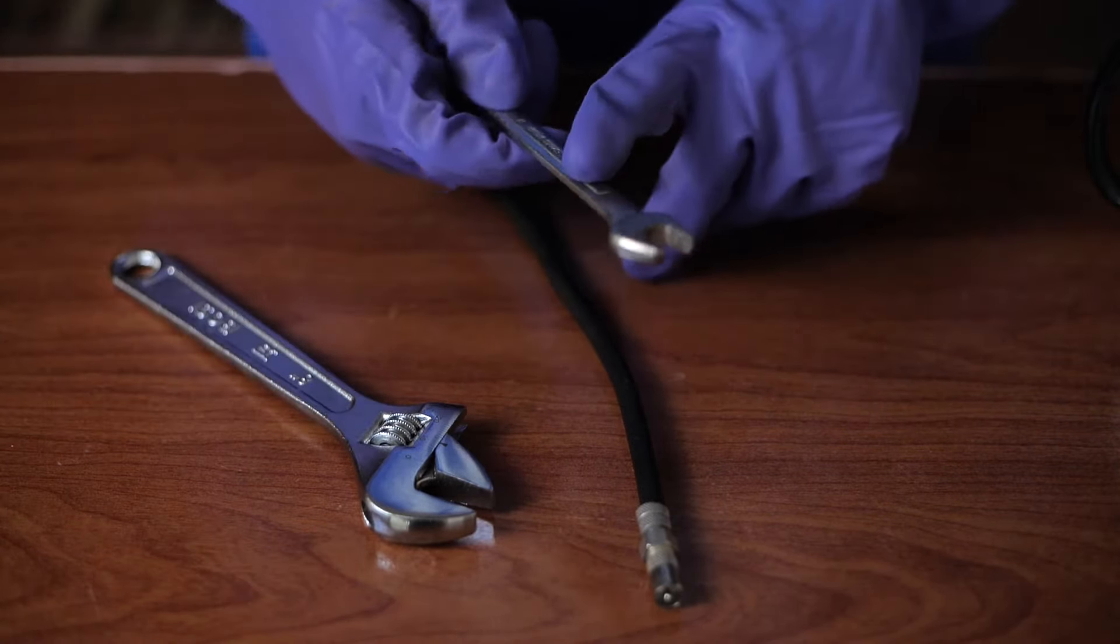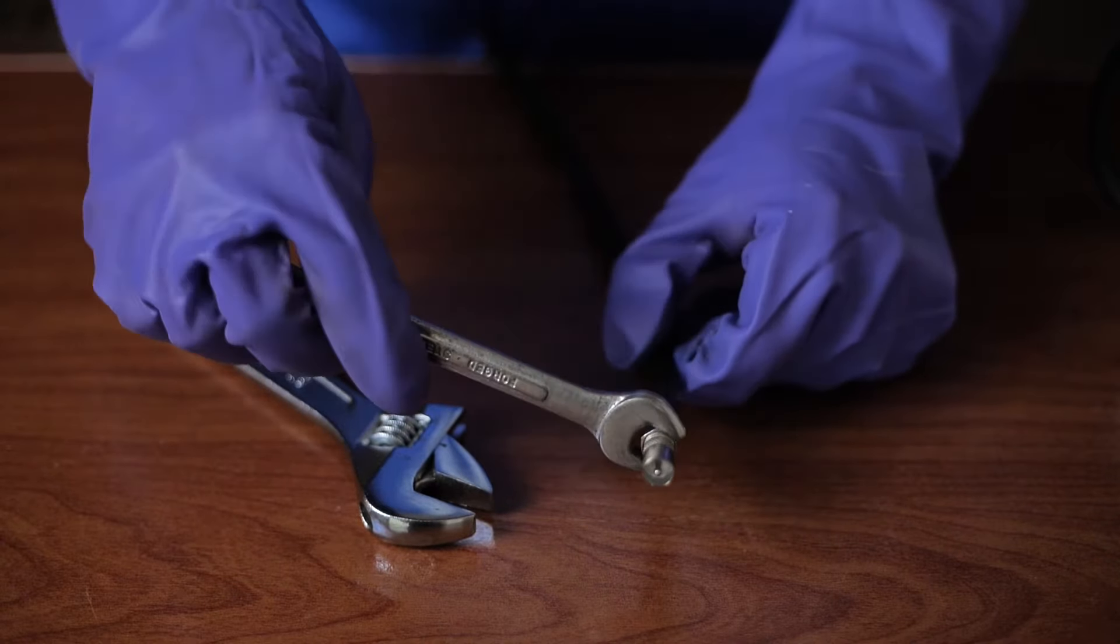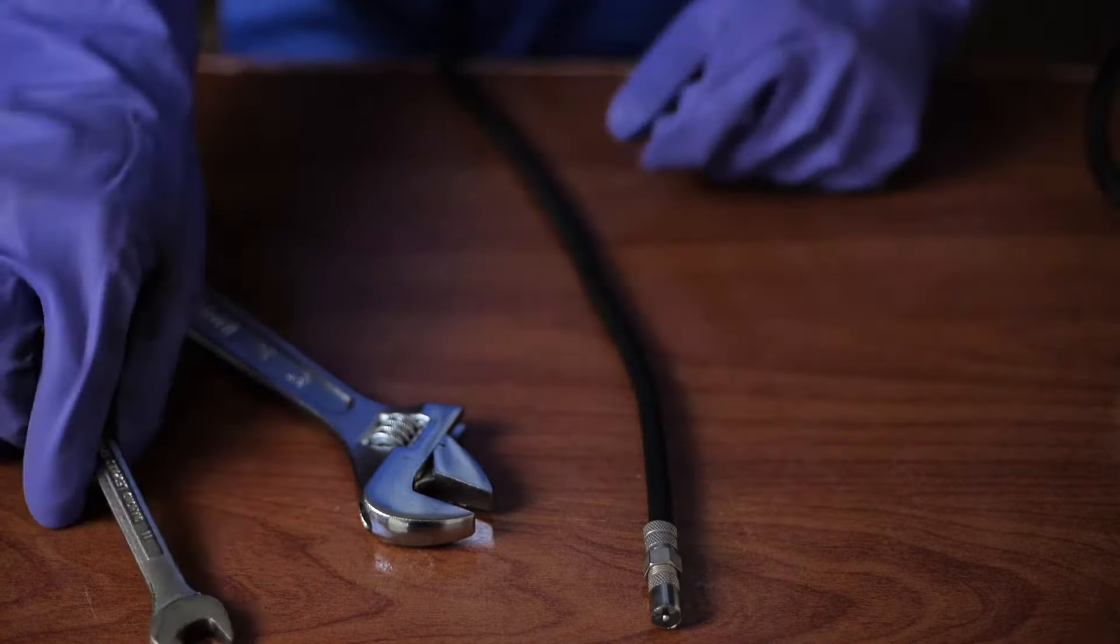The second method is to use an open ring spanner, which is also known as a combination wrench. This is just as effective at getting the job done despite not being adjustable.